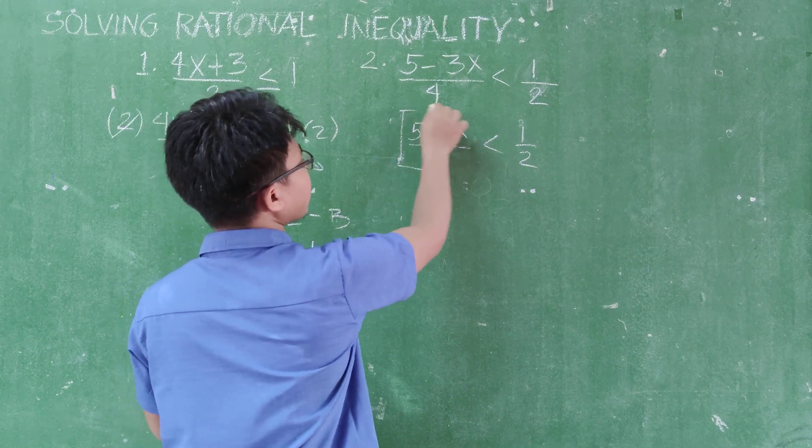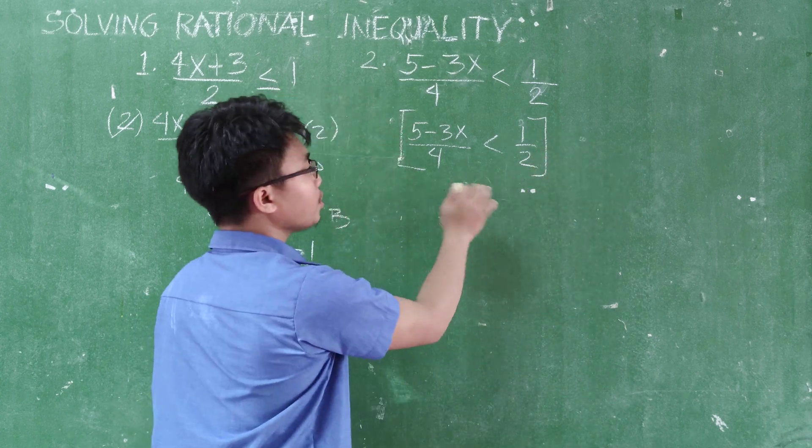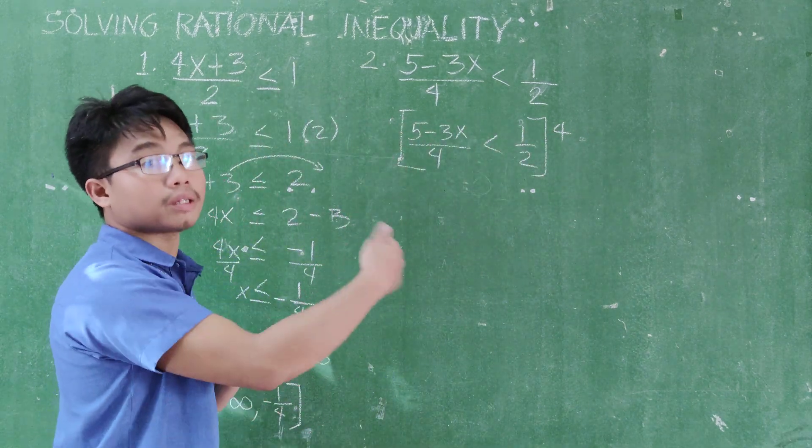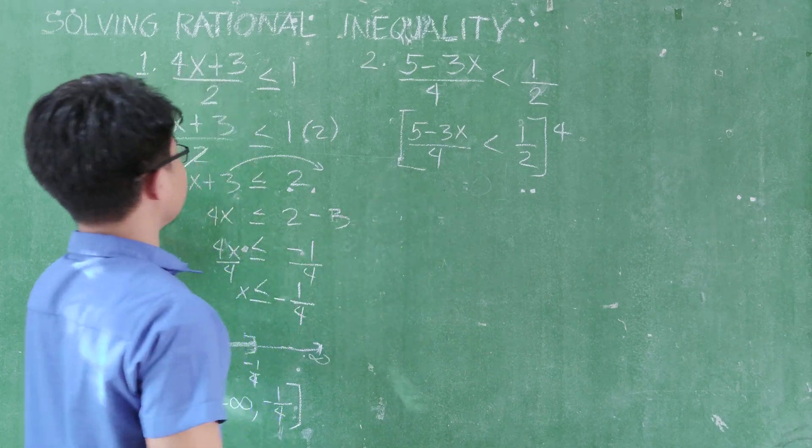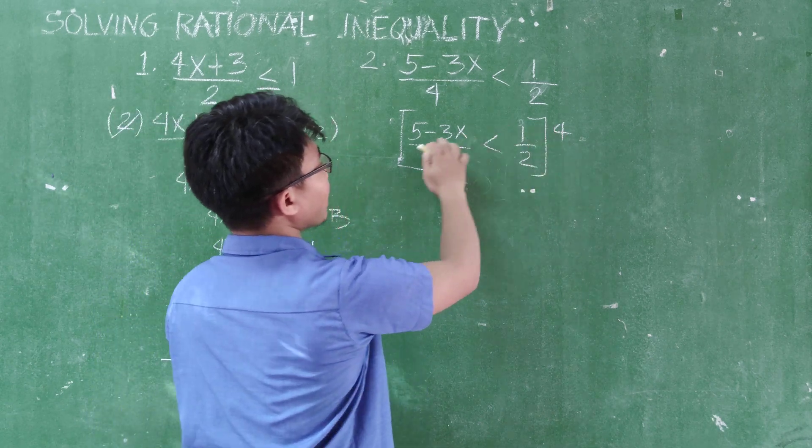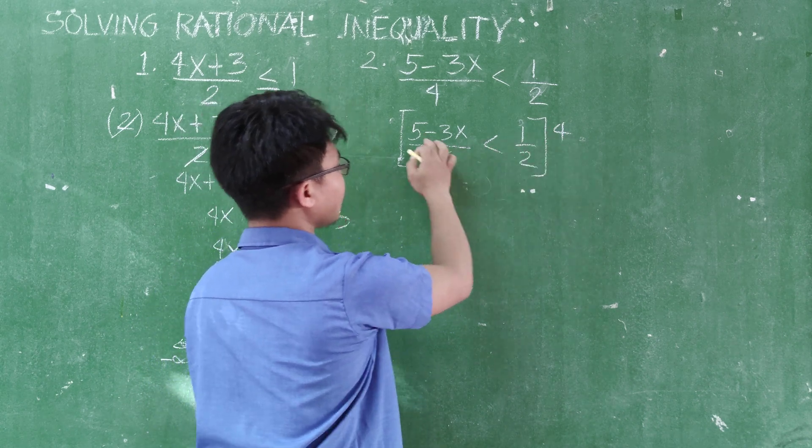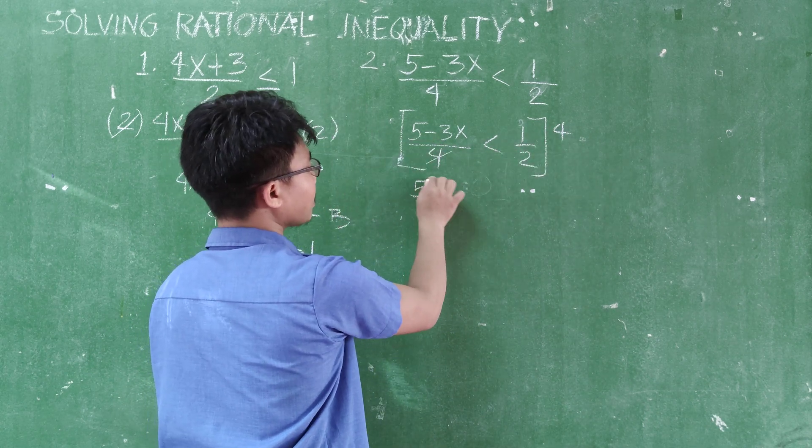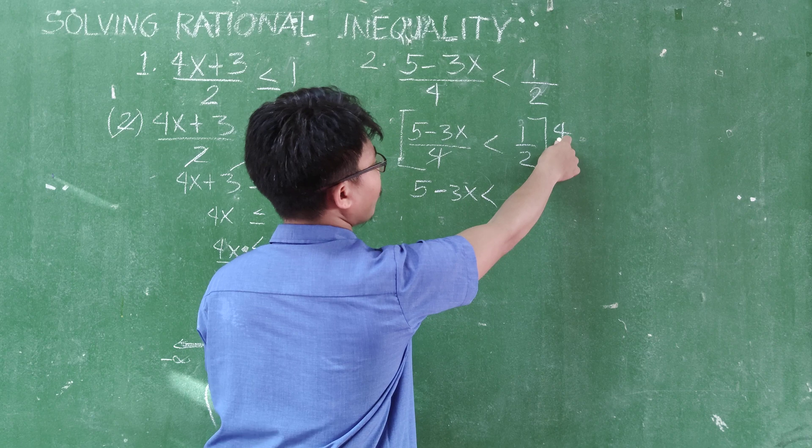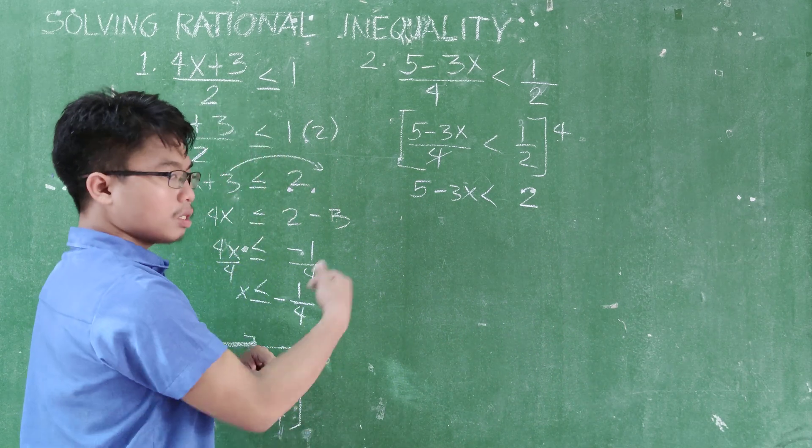You can also do this, put brackets as needed. And then the LCD, which is 4, you apply. So that means that you are doing multiply to the equation. You can have this or this method. So how do we do this? We multiply 5 minus 3x all over 4 to 4. So cancel the 4. What remains is 5 minus 3x. Less than 4 times 1/2. The answer is 4 divided by 2, the answer is 2. So you can now proceed.